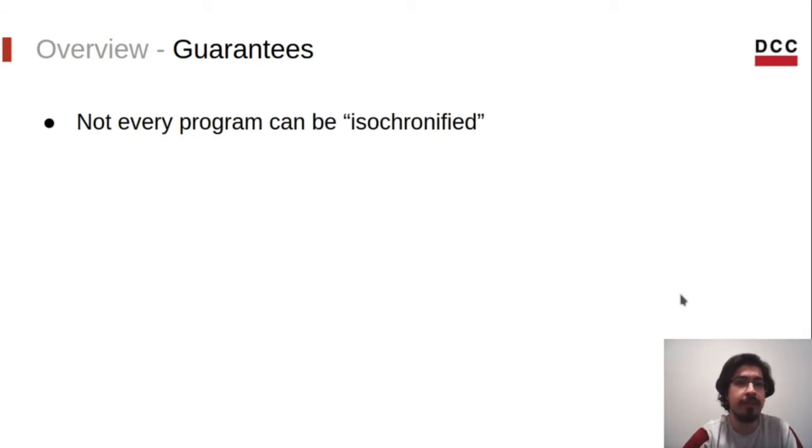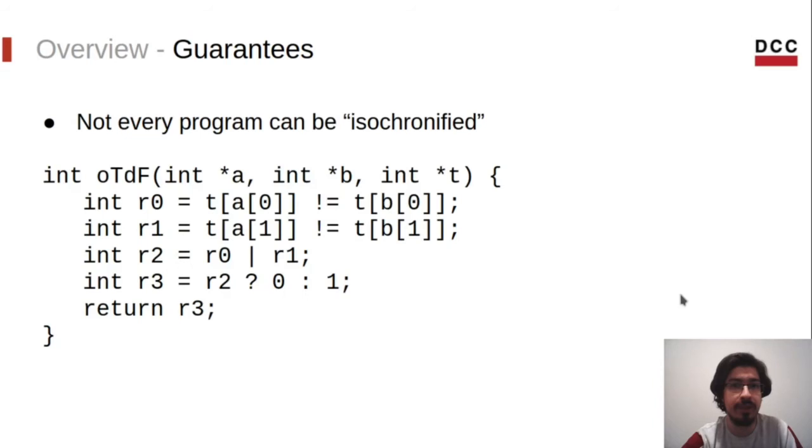Unfortunately, not every program can be safely transformed. Consider, for instance, OTDF. This version is operation invariant, but it's not data invariant. It's quite similar to the previous function OFDT, but it takes one additional parameter T, which is used in the comparisons. Note that now, there is no way for us to tell which positions will be accessed, since we don't know the values in arrays A and B. Thus, we will not consider this kind of functions. There is no hope for them.